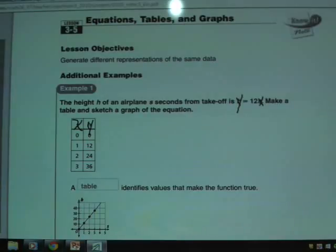whatever you pick is something you're going to have to graph. So if you pick 1,000 for x, you can make it happen. But then you're also going to have to graph 1,000 on the coordinate grid. So we picked 0, 1, 2, and 3.